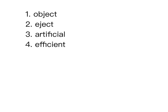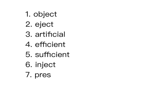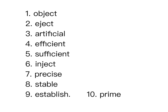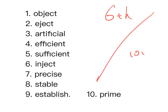回想这些单字的时候，除了中文解释之外，顺便回想字根和字首是怎么组合起来的。第四个efficient，第五个sufficient，第六个inject，第七个precise，第八个stable，第九个establish，第十个prime。总共有十个，一格十分，一百分满分。